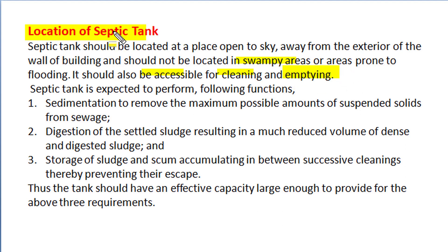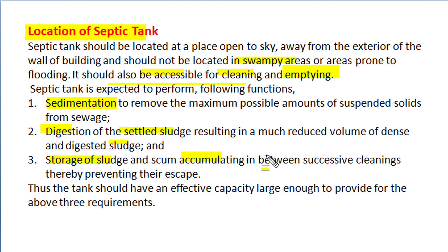In any household sewerage system, the septic tank is expected to perform three functions. First, sedimentation action — to remove the maximum possible amount of suspended solids from the sewage. Second, digestion action of settled sludge — resulting in much reduced volume of dense and digested sludge. And finally, storage of sludge and scum accumulating between successive cleaning or emptying actions, thereby preventing escape of sludge, scum and other pathogens associated with septage. Thus, the tank should have an effective capacity large enough to provide for all three functional requirements: sedimentation, digestion and storage of sludge and scum.